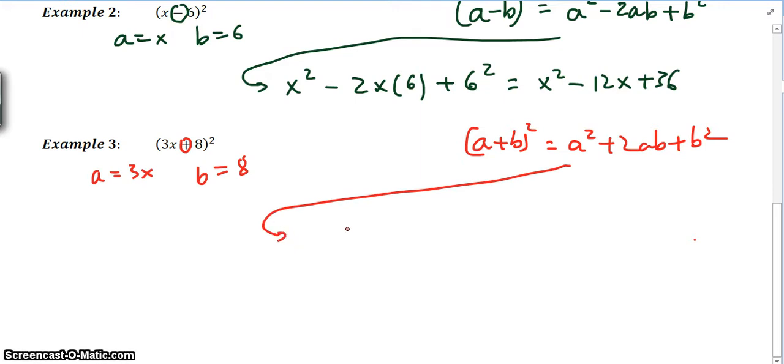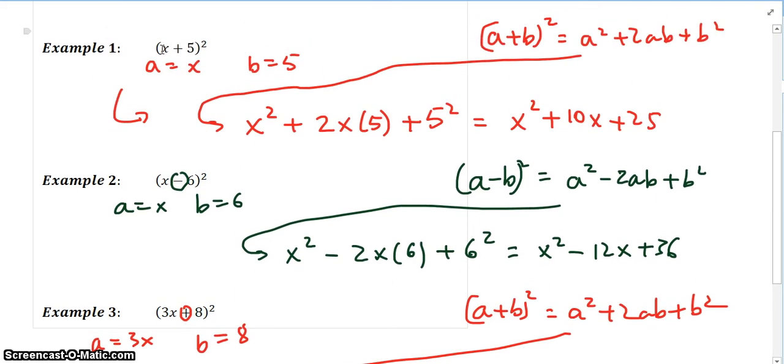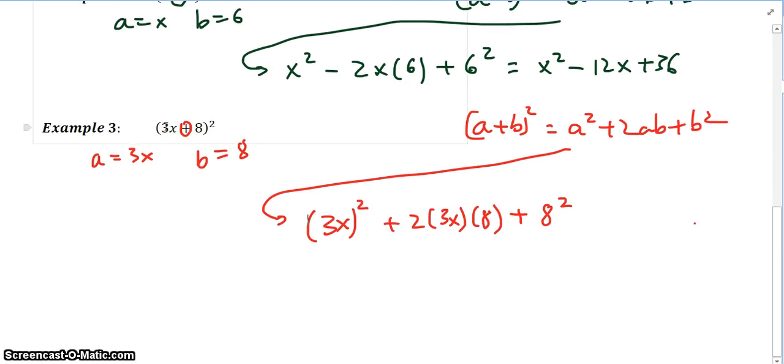What we end up having is 3x, we need to make sure you put that in brackets though, plus 2 times 3x times 8 plus b squared which is 8 squared. Keep in mind, the reason why I've put this in brackets this time is because this is not just like all the previous questions. You can see with the previous questions I've just had an x value. For this one we have a 3x, so you need to be careful with that case.